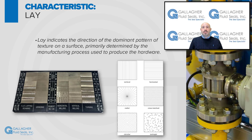The first characteristic that we will discuss is lay, which is the direction of the dominant surface texture pattern, primarily determined by the manufacturing method used to produce the hardware. A few examples are radial, circular, linear, and horizontal.